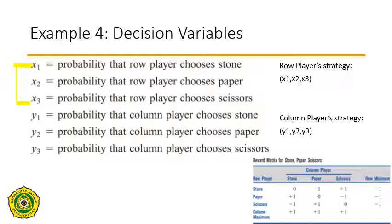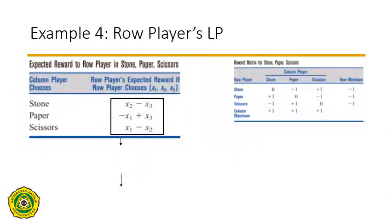Similarly, for the column player, the strategy is defined by three decision variables y1, y2, and y3, where y1 means the probability that the column player chooses stone. Now let us construct the row player's linear programming model.